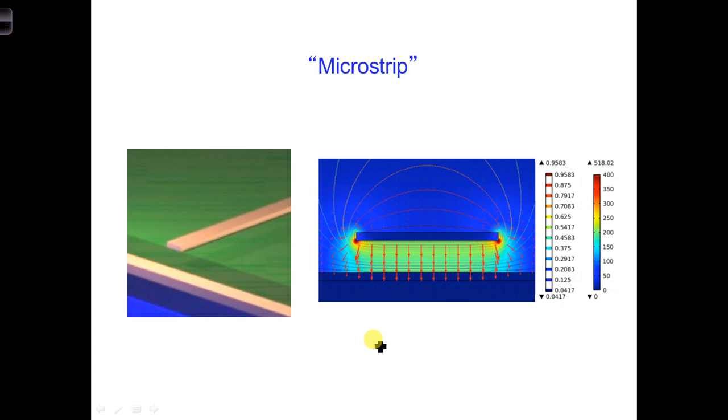So look at the electric and the magnetic fields in between the two conductors. See right here in between. They behave exactly as a plane wave.